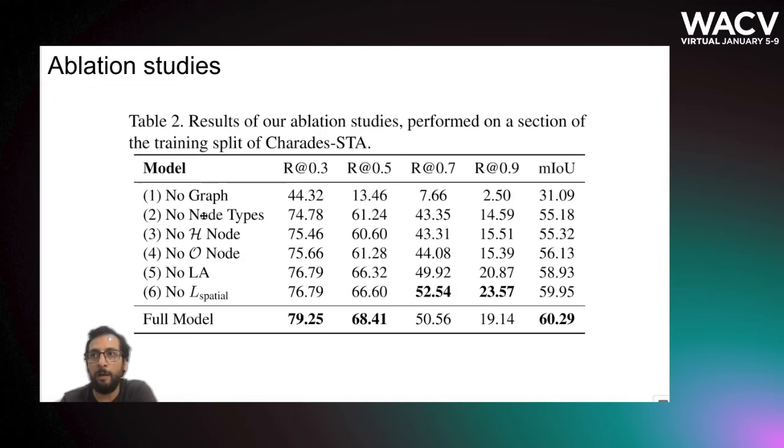The no human and no object means that there is no human and there is no object features. Each of the components that we use here are improving the performance of our model.